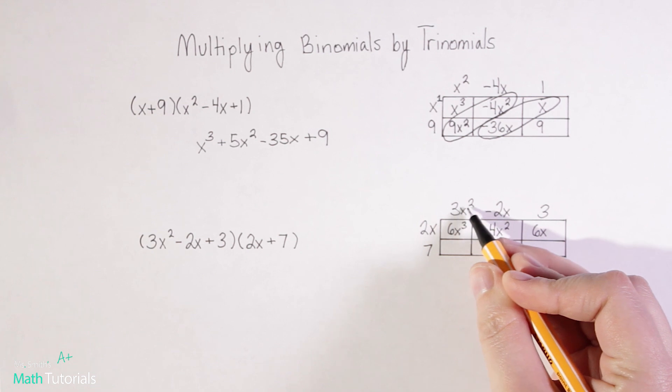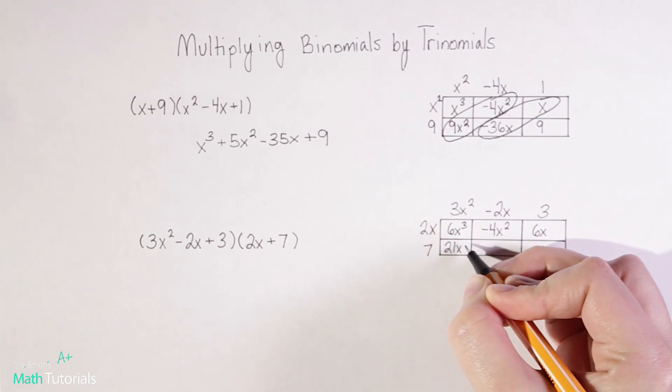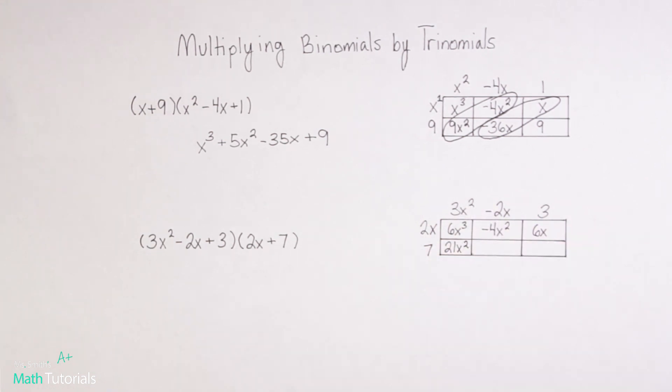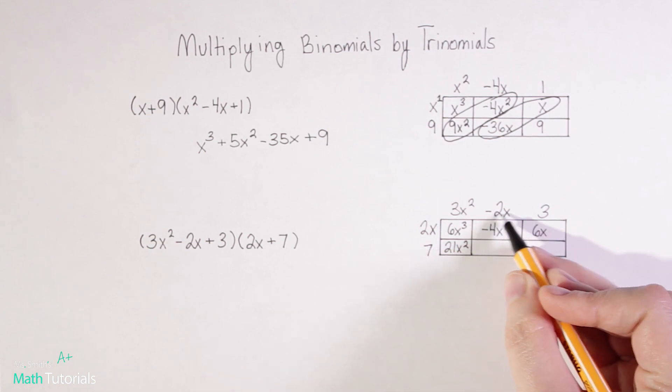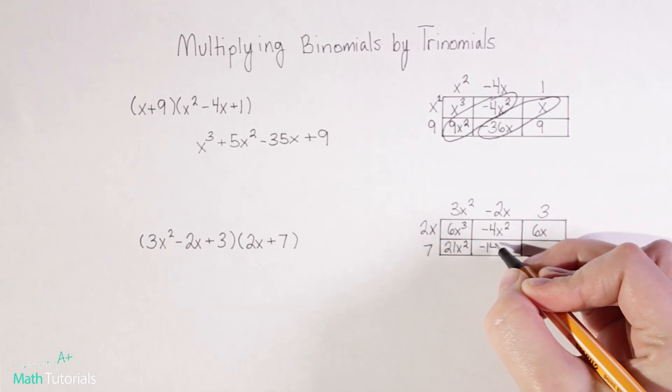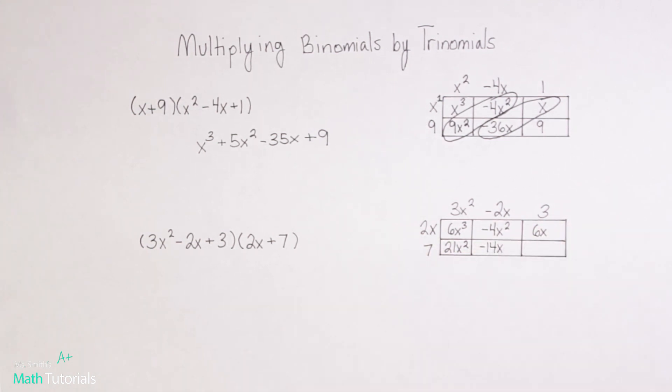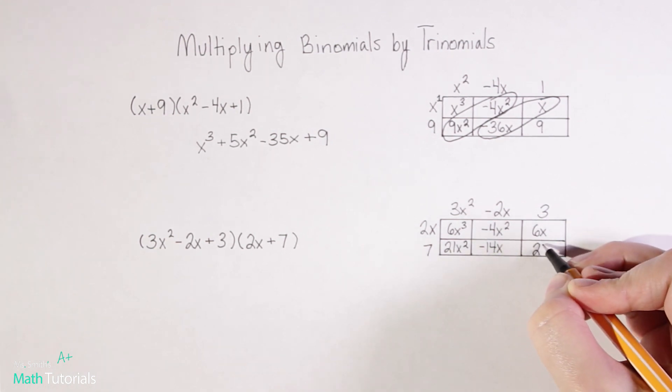7 times 3x squared will give me positive 21x squared. 7 times negative 2x would be negative 14x. And 7 times 3 would give me positive 21.